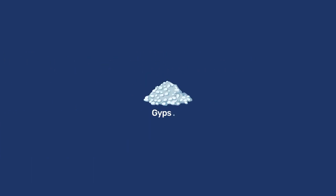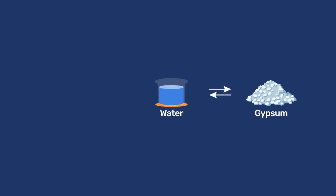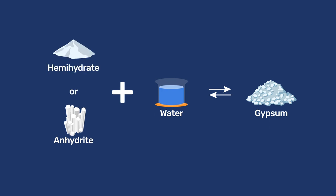In this video, we will see that these characteristics rely on coupling the precipitation of gypsum with the dissolution of either anhydrite or hemihydrate, generally referred to as plaster of Paris.